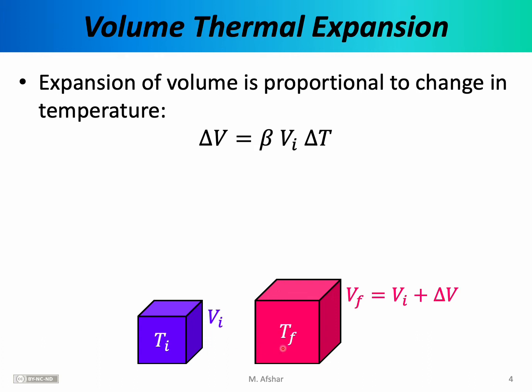As we raise the temperature, the volume increases. At this final temperature, we'll call the final volume V sub f. The difference between the initial and the final volume will be delta V. Delta V is given by this formula here. Once again, we have a constant in front. We multiply that by the initial volume of the object. We multiply that by the change in temperature and we get the change in volume of the object.